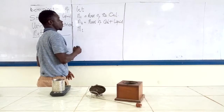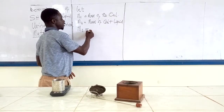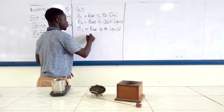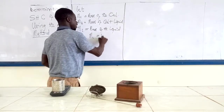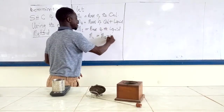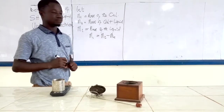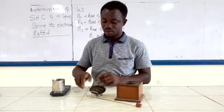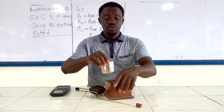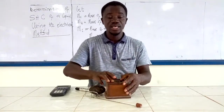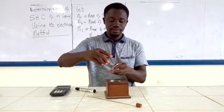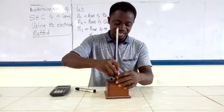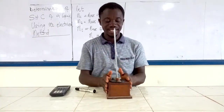How do we determine the mass of the liquid? Let ML be the mass of the liquid. ML equals M2, the mass of calorimeter plus liquid, minus MC, the mass of the calorimeter only. That gives us the mass of the liquid inside the calorimeter. Having determined the mass of the liquid, we mount our calorimeter into its stand, put the cover on it, then mount the thermometer on top to make sure it touches the liquid inside.